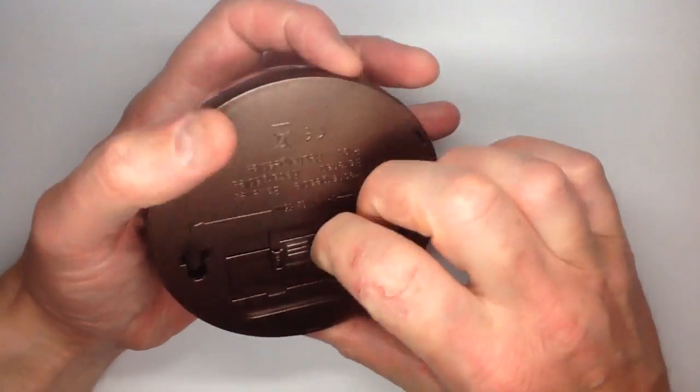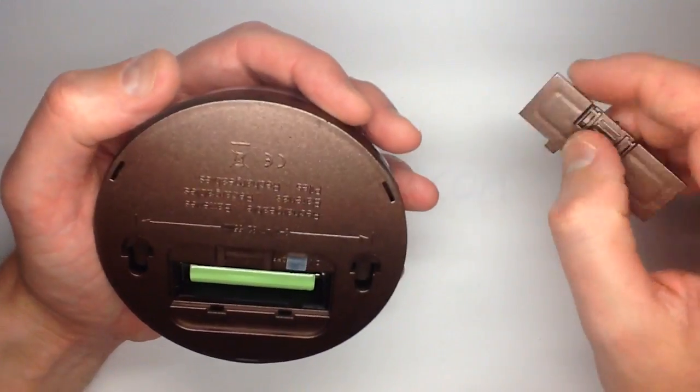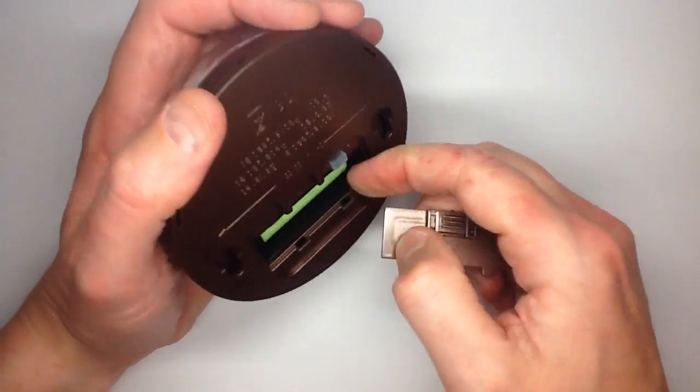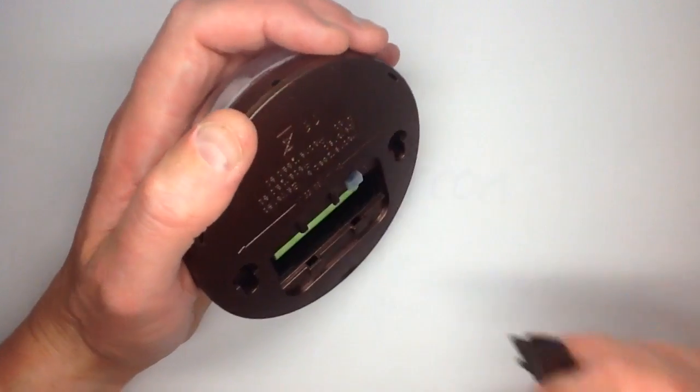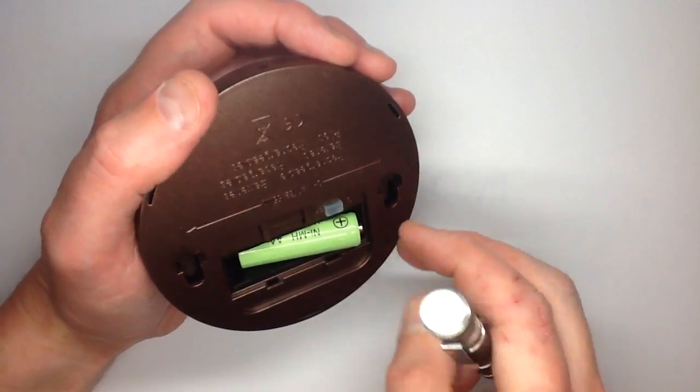So I see an actual battery compartment in the back here. Screwdriver. Let's hook that out and see what capacity it is. 600mAh?